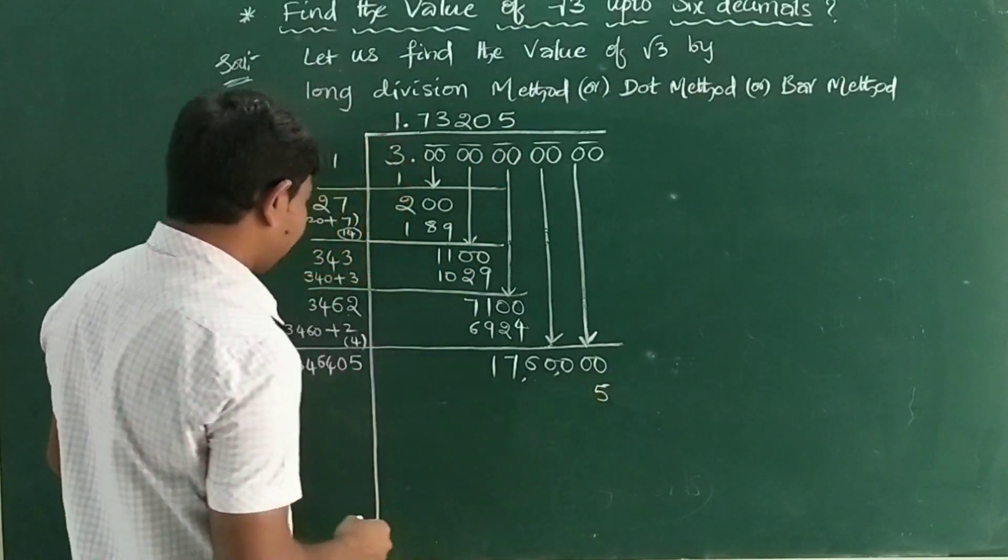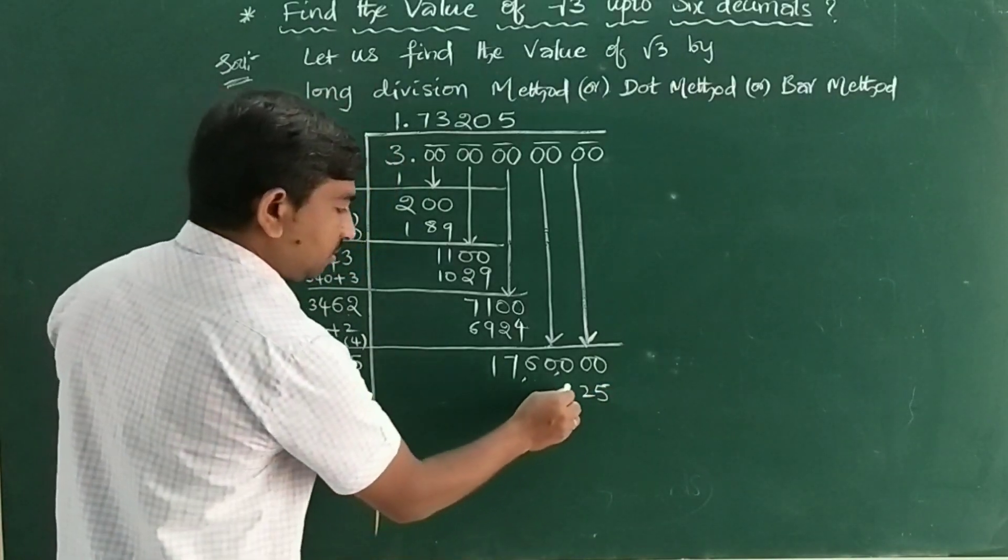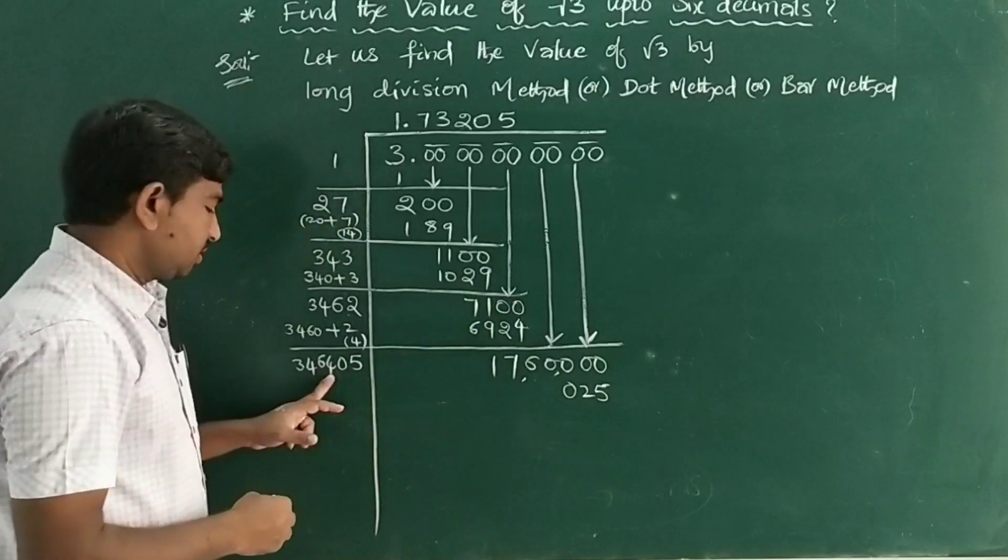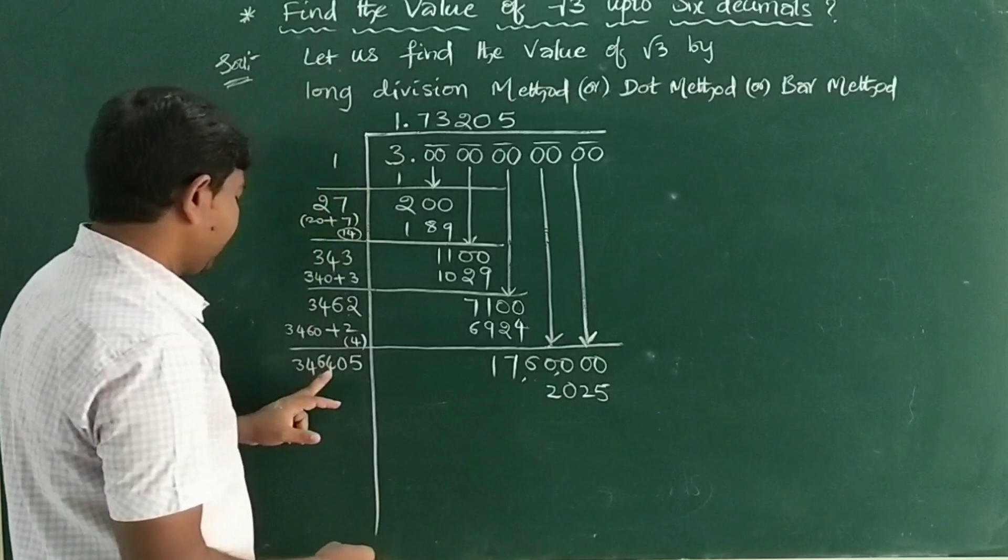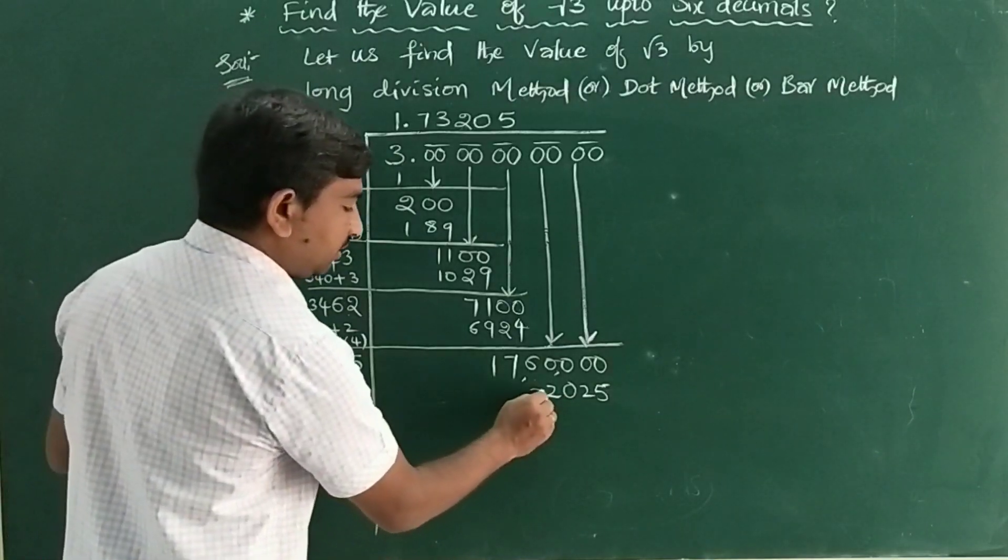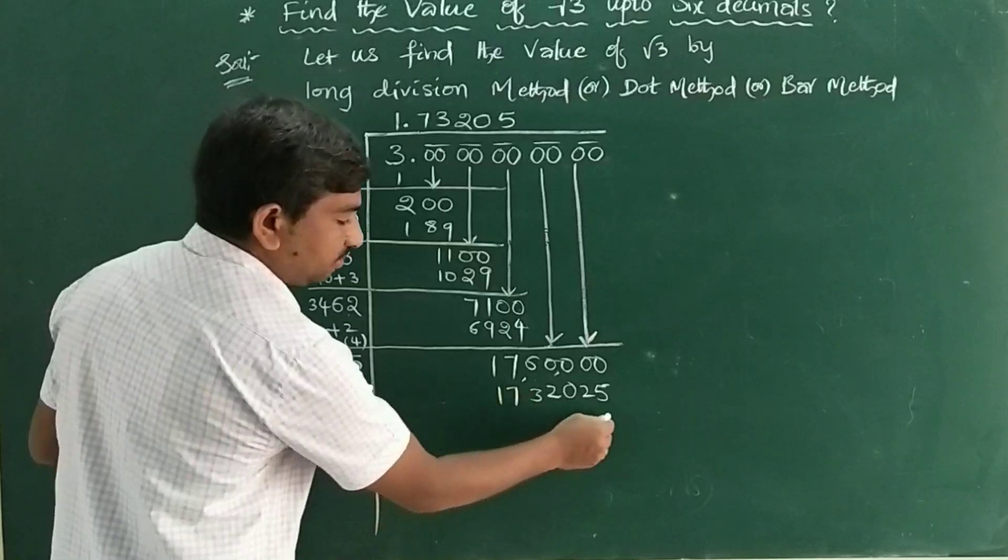5×4 is 20, 5×6 is 30 plus 3 is 33, 5×4 is 20 plus 2 is 22. Working through all the multiplication steps...